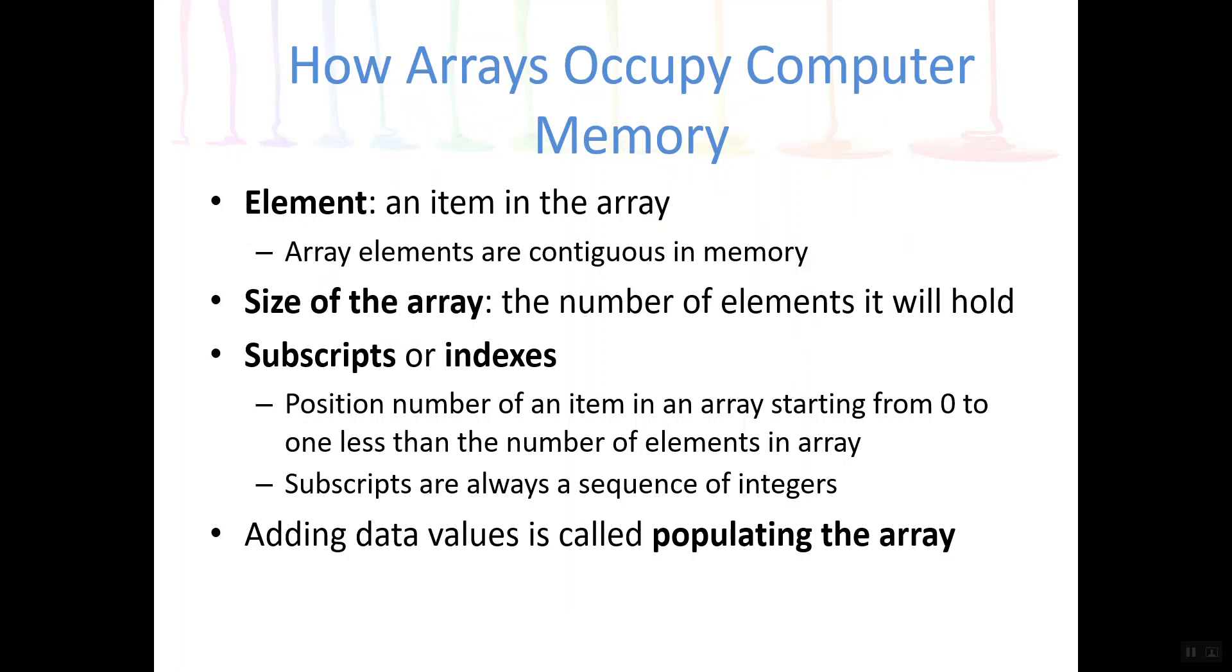Subscripts and indexes are synonymous, meaning these two words are interchangeable. It is a numeric value that refers to each element positionally within the array. Meaning for example the first element in the array would have an index of zero. The second element in the array would have an index of one. It is a zero based system so the first item in the array has an index of zero.